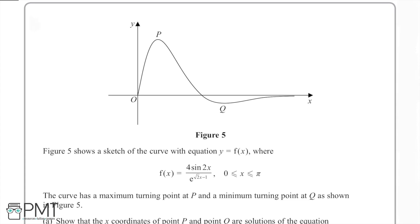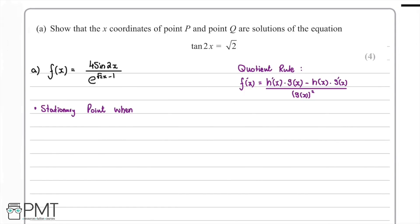In this question we're shown a curve with equation y equals f(x), where f(x) equals four sine 2x over e to the power of root 2x minus 1. The curve has a maximum turning point at P and a minimum turning point at Q. For part a, we're asked to show that the x-coordinates of P and Q are solutions of the equation tan(2x) equals root 2.